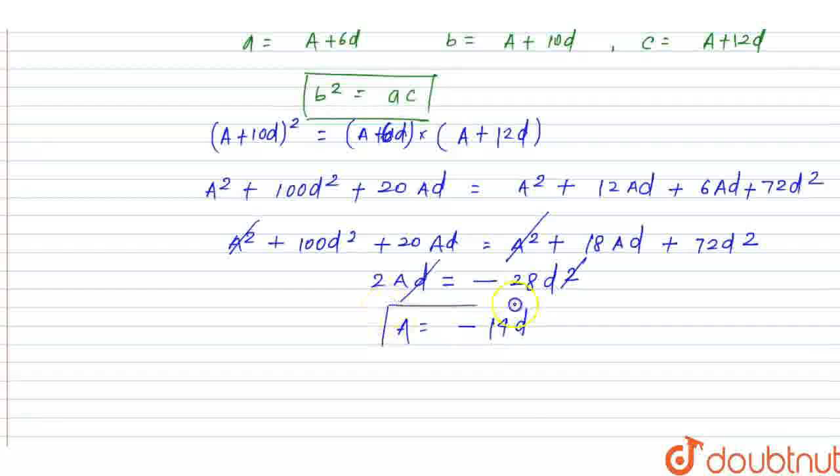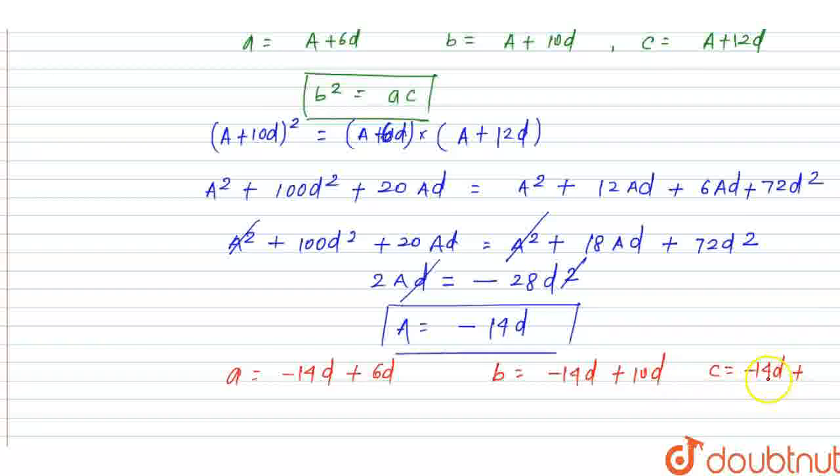d cancels out, so A = -14d. Then the value of a can be written as A + 6d = -14d + 6d = -8d. Similarly, b = -14d + 10d = -4d, and c = -14d + 12d = -2d.